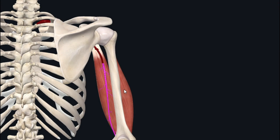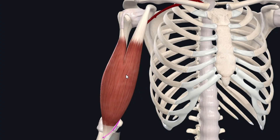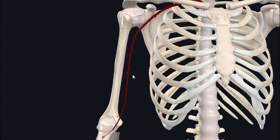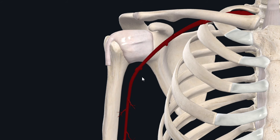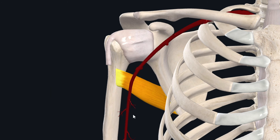The biceps brachii muscle receives its arterial supply from the brachial artery, which is a major blood vessel of the arm that lies deep to the biceps brachii. The brachial artery begins as a continuation of the axillary artery — as the axillary artery crosses the lower margin of the teres major muscle, it continues as the brachial artery, which then supplies the biceps brachii muscle.